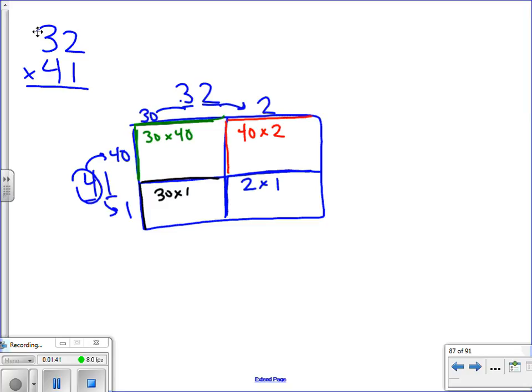And of course we work these multiplication problems out the same way that we have before. Where we try to remember 3 times 4 is 12. Well, there's a zero here and a zero here. Now this is a little different than what we've done before.